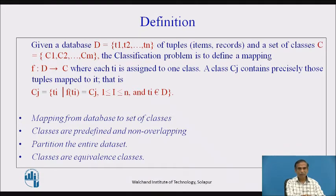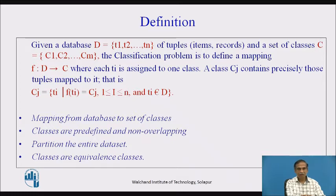We can now define classification: given a database with tuples t1 up to tn of items or records and a set of classes c1 up to cm, the classification problem is to define a mapping between the database and the classes. Each ti is assigned to one class cj, where cj contains precisely those tuples mapped to it — that is, cj equals {ti | f(ti) = cj} — and every ti belongs to database D.